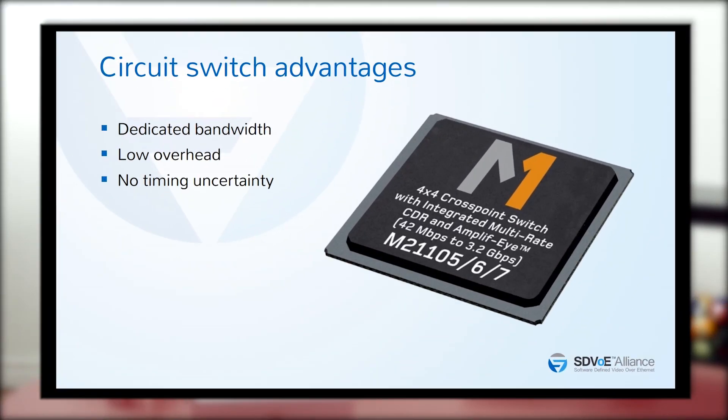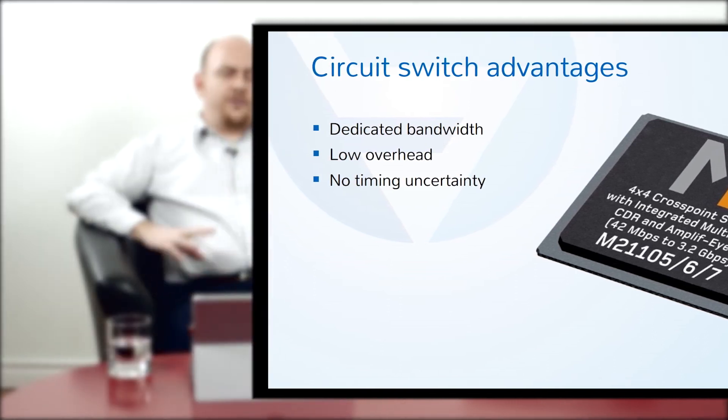Circuit switches carry a lot of advantages with them. This is why every communication technology really starts out being distributed and switched through a circuit. The bandwidth from point A to point B is always purely dedicated — no one else's traffic is going on the line from your home to the central switching station to your friend's home for your telephone call. There's very low overhead; I don't need to add extra bits about where this information is headed. I simply make a connection and everything that goes on that connection is the actual communication itself. And this means there's also no timing uncertainty, which is especially important in synchronous communication like audio or video, where it's very important that the bits arrive on time and in order. Circuit switches make that very easy because there's nothing interfering in that signal path — what comes in goes to the other side in order.